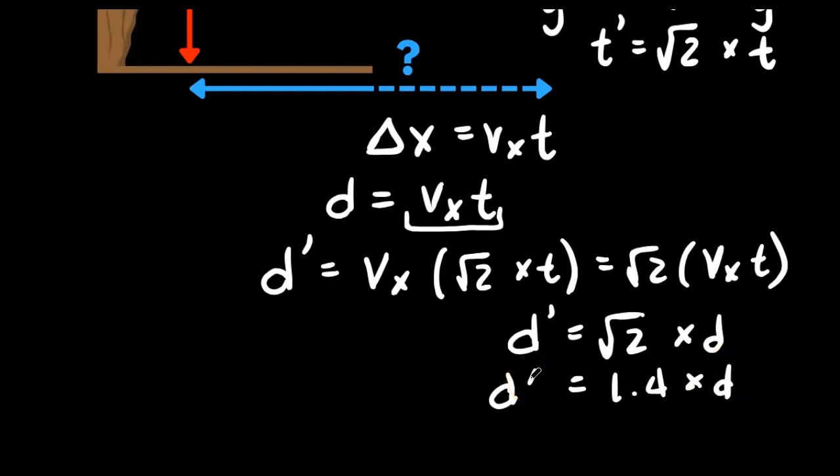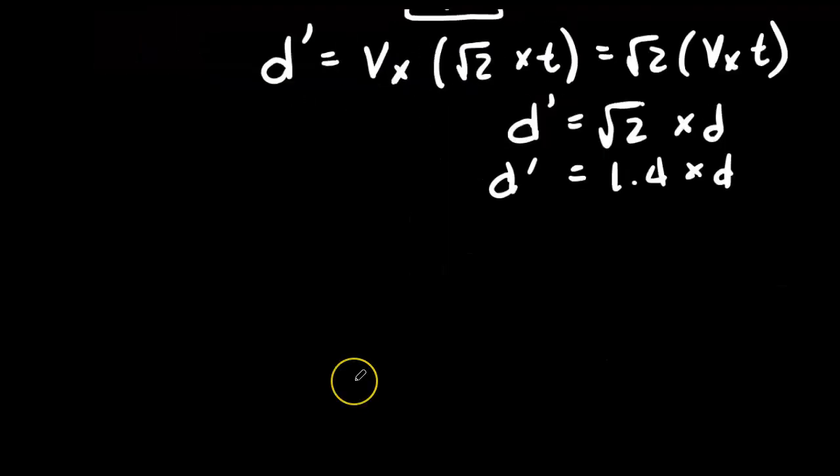So doubling the height did not double the distance — it only changed it by a factor of square root of 2, about 1.4 times. So how much do we have to increase the height to double the distance? Let's try quadrupling — 4 times the height — and see if that does it.